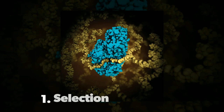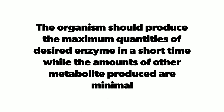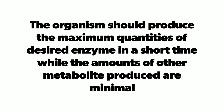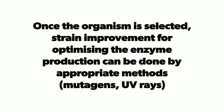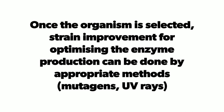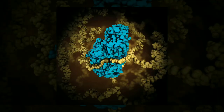Step one: selection of organism. The organism should produce maximum quantities of the desired enzyme in a short time while the amount of other metabolites produced is minimal. Once the organism is selected, strain improvement for optimizing enzyme production can be done by appropriate methods such as the use of mutagens and UV rays. From the chosen organism, an inoculum can be prepared in a liquid medium.